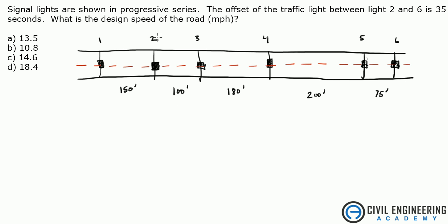So we know between lights 2 and 6 it takes 35 seconds to get between those two. And so this is simply a problem of knowing that when these lights turn green it takes 35 seconds to go between lights 2 and 6.